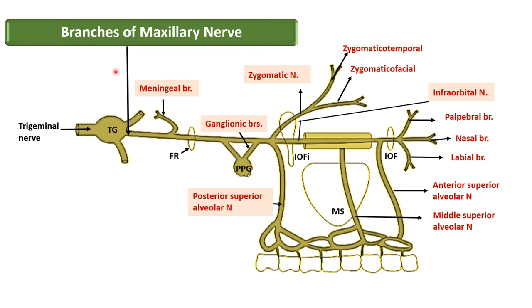Let us now consider the branches of the maxillary nerve in four parts. First: branches given in the middle cranial fossa. Second: branches given in the pterygopalatine fossa. Third: branches given when the nerve runs along the floor of the orbit in the infraorbital groove and canal. Fourth: branches given once the nerve emerges on the face. In the middle cranial fossa, only one branch is given and it is known as the meningeal branch.